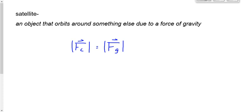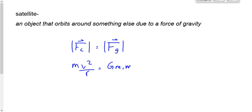The centripetal force is mv² over r. For the gravitational force, you could say m times g, but the problem is we don't know what g is away from Earth's surface. Instead, we use G·m1·m2 over r², so we don't need to calculate gravitational field strength first.